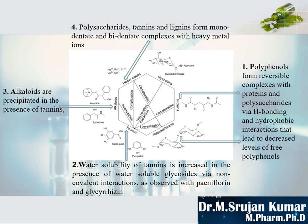Fourth: if your herbal material contains polysaccharides, tannins, and lignins, these will form monodentate and bidentate complexes with heavy metals. So when polysaccharides, tannins, lignins, and heavy metals are all present together, the polysaccharides, tannins, and lignins form monodentate and bidentate complexes with heavy metals. These are four types of interactions possible in herbal materials, though there are many more.